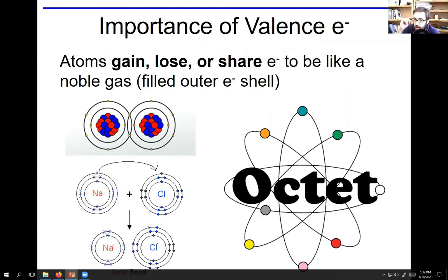This will set up the next chapter and tell us why different reactions happen the way they do, why different ions are the way they are. They want to attain noble gas configurations. Atoms gain, lose, or share electrons to be like a noble gas - that's the most stable state. They have filled orbitals, that's why they're stable.